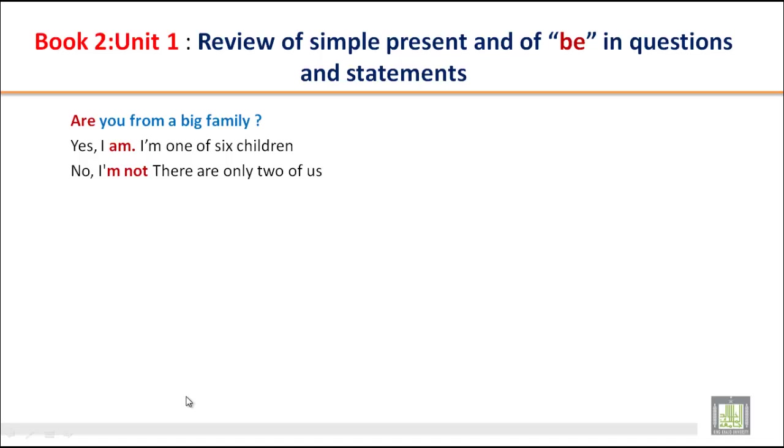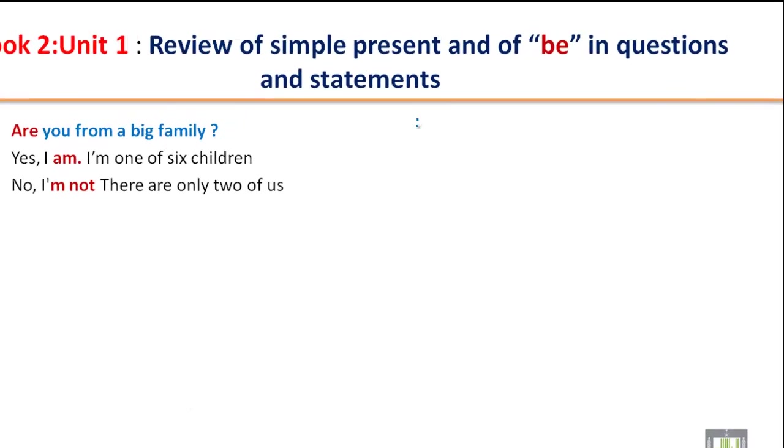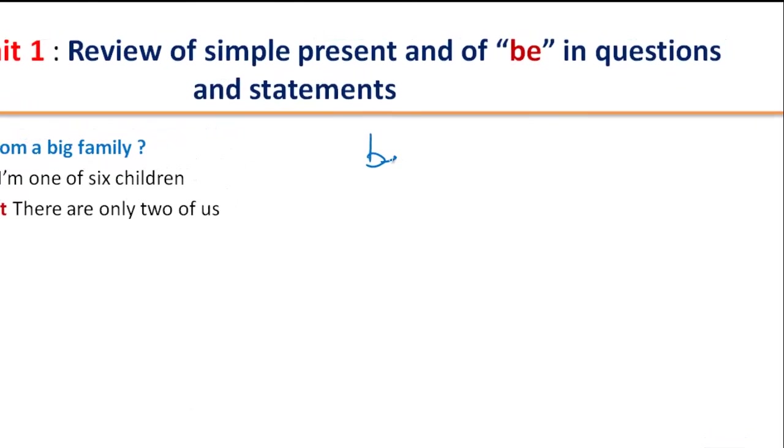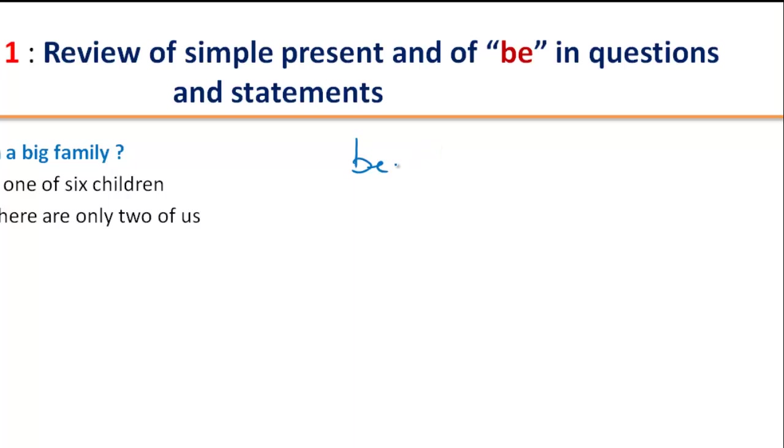we have three basic forms of verb B in Simple Present. And that is AM, IS and ARE. AM we use only with I, IS we use with, do you remember, with singular,